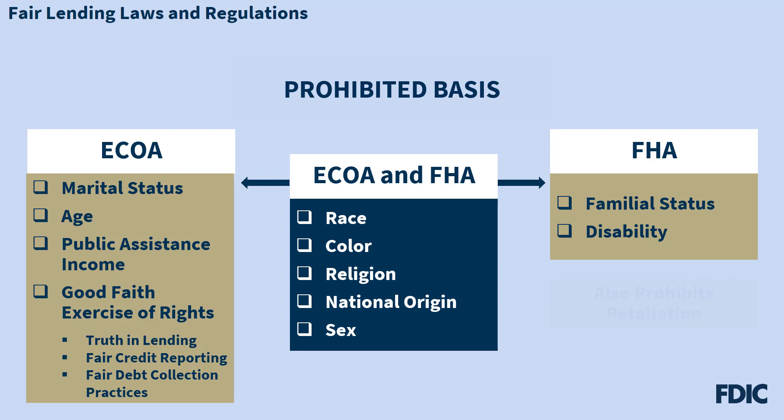The FHA also prohibits retaliation against a person who exercises his or her rights under the FHA, or retaliation against a person who helps another person exercise his or her rights under the FHA.